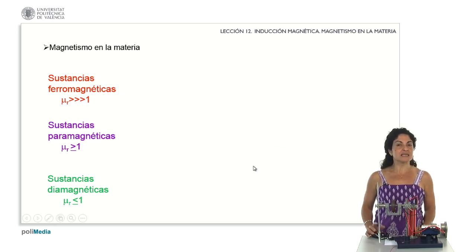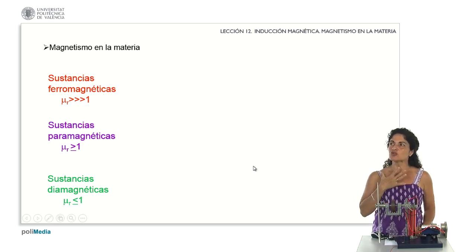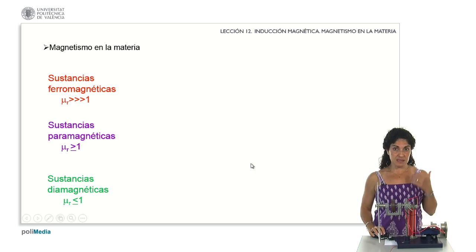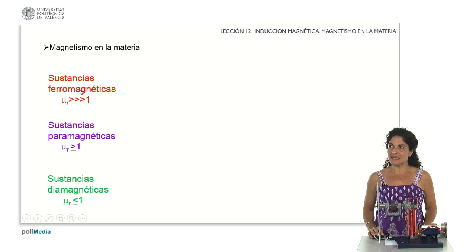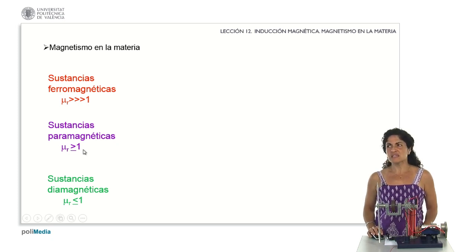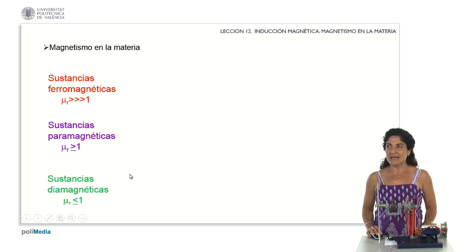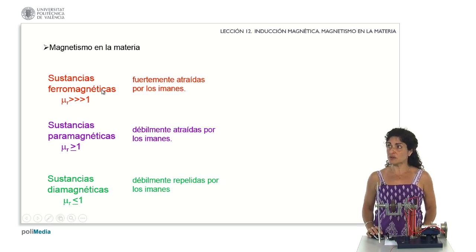Furthermore, it turns out that materials — those conductors we are talking about — respond very differently based on their magnetic properties. These properties are perfectly determined, just as we determined when obtaining the magnetic field from the parameter of magnetic permeability. Substances are divided according to their magnetic behavior into ferromagnetic substances, when the relative magnetic permeability is much greater than one; paramagnetic substances, when that relative permeability is a little greater than or equal to one; and diamagnetic substances, when it is less than one.